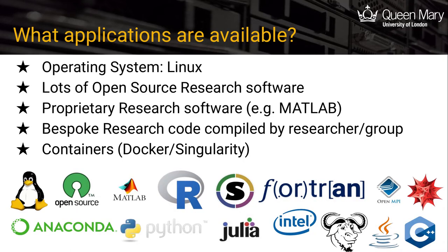What applications are available on Apocrita, and how do you get some installed? The operating system is Linux, which has lots of open source research software available. There is also proprietary software such as MATLAB and ANSYS. You may have bespoke code compiled by your research group or collaborators, and there is another method known as containers which may also be used to run your code.